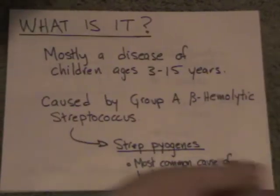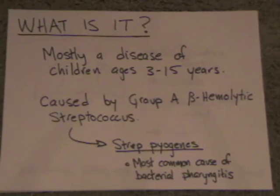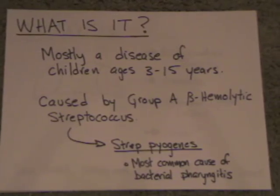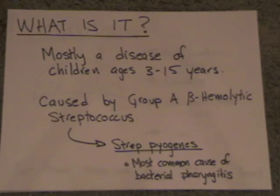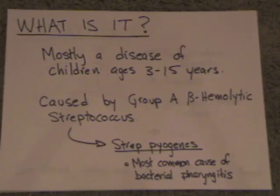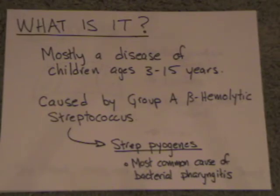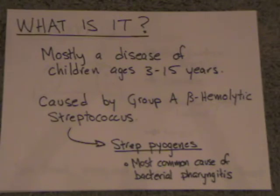Talking about strep throat today. What is strep throat? Strep throat is an infection involving the pharynx, which is basically what most people think of as the throat, kind of behind the tongue and going down towards the esophagus. Strep throat is a bacterial infection. It's mostly in kids ages 3 to 15, although it can happen to any of us. It's caused by a bacteria called Group A beta-hemolytic streptococcus, also known as Strep pyogenes — that's the actual bacteria that causes it.